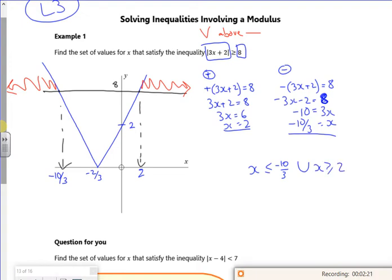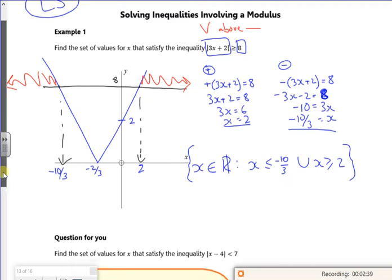So the inequality I've got is x is less than or equal to minus 10 over 3, or because it's two separate bits, x is greater than or equal to 2. I've got to wrap that around with the set notation, so x belongs to the real numbers such that, and then put my curly brackets.